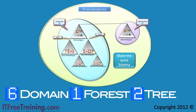The advantage of having a forest is that all domains in the forest also have trust relationships generated automatically. As shown here, a user in HighCostTraining could access a resource in East.ITFreeTraining.com. The trust relationship is automatically created between parent and child domains and between trees in the forest. Assuming the user in HighCostTraining has access, they can access any resource in any domain in the forest.